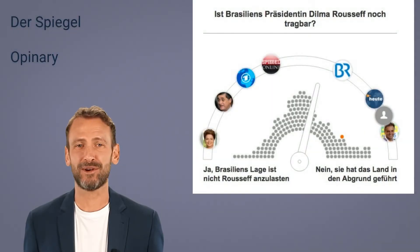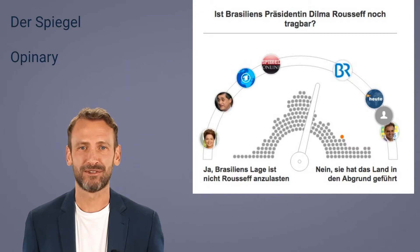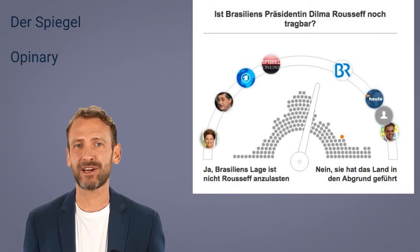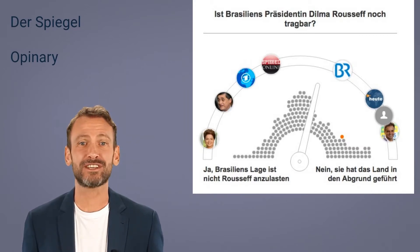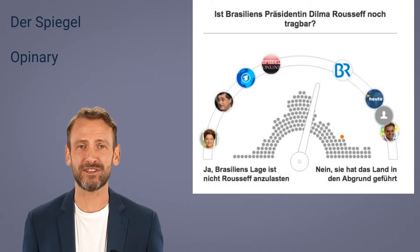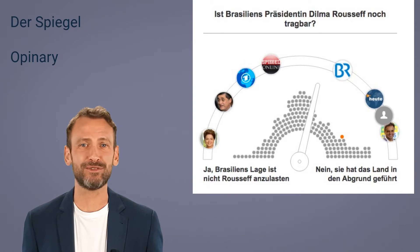Der Spiegel, a weekly news magazine from Germany, uses Openery, an AI product from a Berlin startup. Der Spiegel uses the AI-based platform to allow users to air their opinions on an article in real time and also create interactive data visualizations.